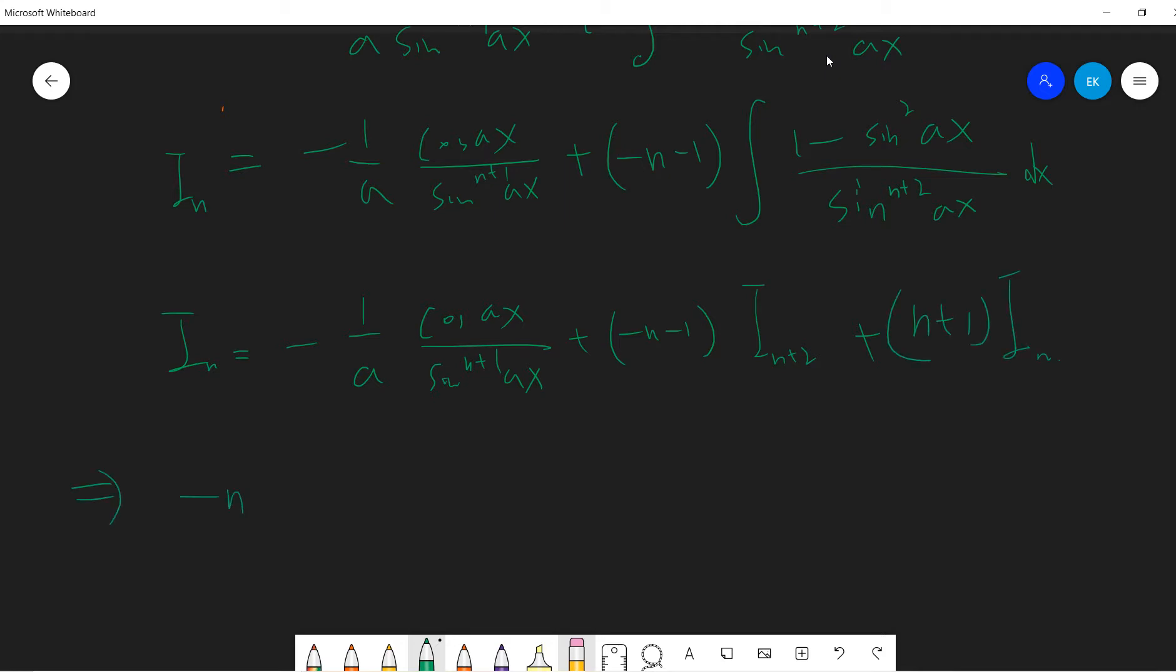So combine, we get minus n i_n, equals to negative a. Right, right. I think it's correct. And then this is negative.